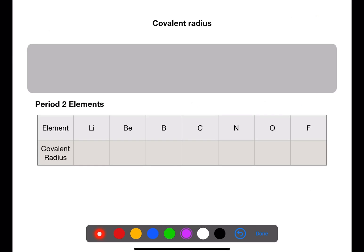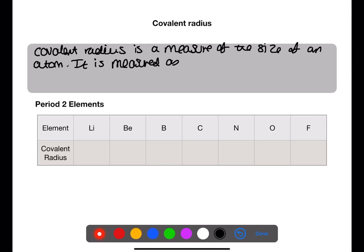Let's look now at some trends in the periodic table. There are three trends that we're going to look at. The first is covalent radius. Covalent radius is a measure of the size of an atom. It is measured as half the distance between two nuclei in a bond. We're going to look at covalent radius across a period and down a group. Pause the video now and use your data book to find the covalent radius for the period two elements.